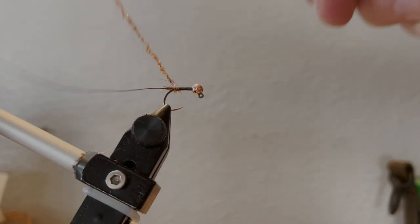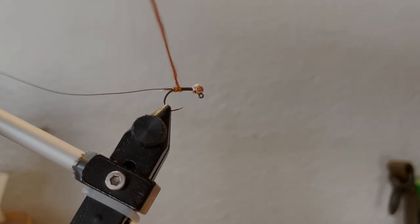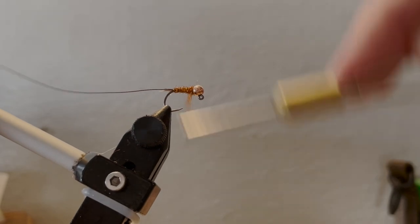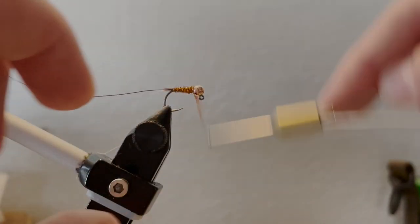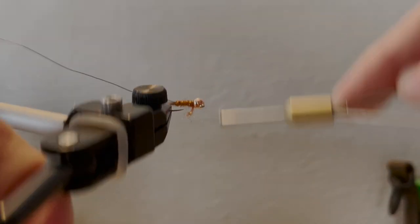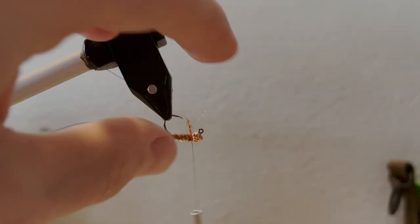Once you've created your dubbing noodle, you can start by wrapping, having your first wrap right in front of the tail here, and then continue to wrap up. Keep it pretty thin, but it's all right if it gets pretty bushy too. You don't want a thick body though.